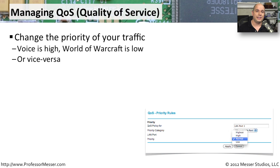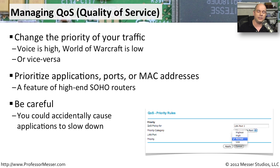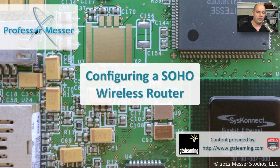Some higher-end SOHO wireless devices allow you to configure Quality of Service (QoS), which lets you set different priorities for different types of traffic. For example, you might give Voice over IP traffic higher priority than gaming traffic. You can prioritize by application, MAC address, or physical port on the router. Lower-end SOHO routers may not have this feature due to the overhead involved. When configuring QoS, make sure your most important applications get the highest priorities, and test it thoroughly before finalizing the configuration.